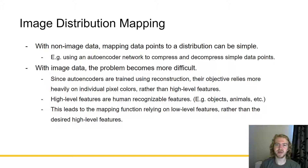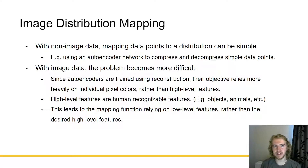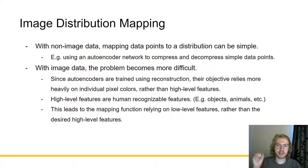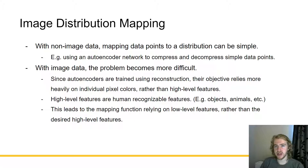With non-image data, mapping data points to a distribution can be quite simple. Using an autoencoder network to compress and decompress simple data points like the housing example, it can be quite simple. However, with image data, the problem becomes much more difficult. Since autoencoders are trained using reconstruction, their objective relies more heavily on individual pixel colors rather than high level features. When an image is compressed and decompressed, its reconstruction score is very often based on how different each pixel is from the exact same pixel in the original image. So it will compress the image only taking in the color data and maybe some simple lines and shapes. This is quite undesirable for anomaly detection.